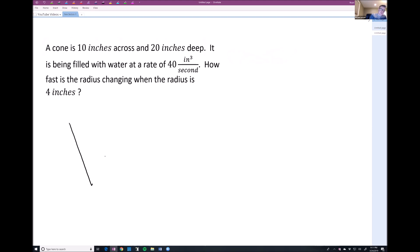Alright, let's draw the picture here first and see what this would look like. So I have my cone. It said it was 10 inches across and it said it was 20 inches deep there. Okay, so that tells me that the diameter is 10 and the height is 20, which if the diameter is 10, that tells me that the radius is 5. It's half the diameter.